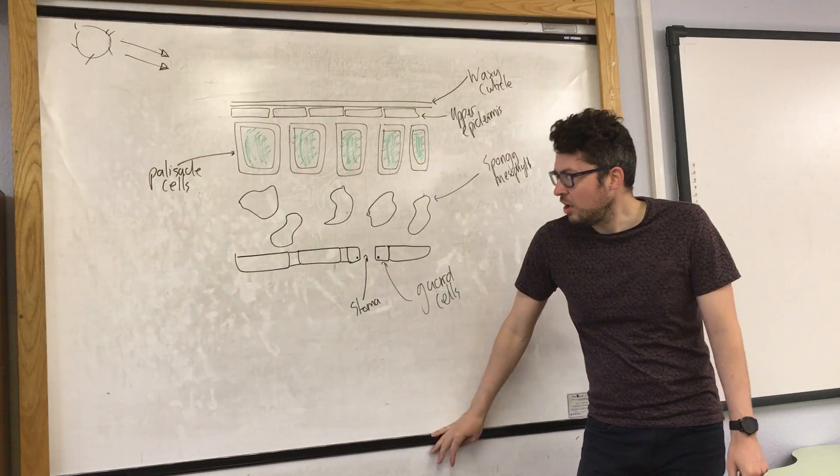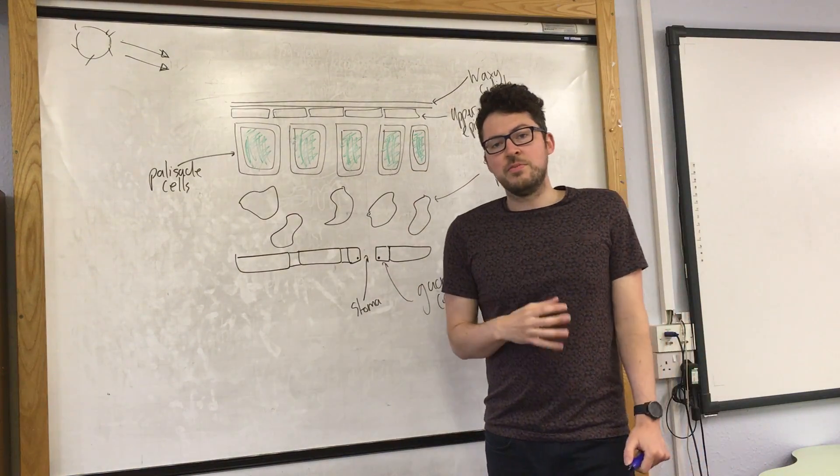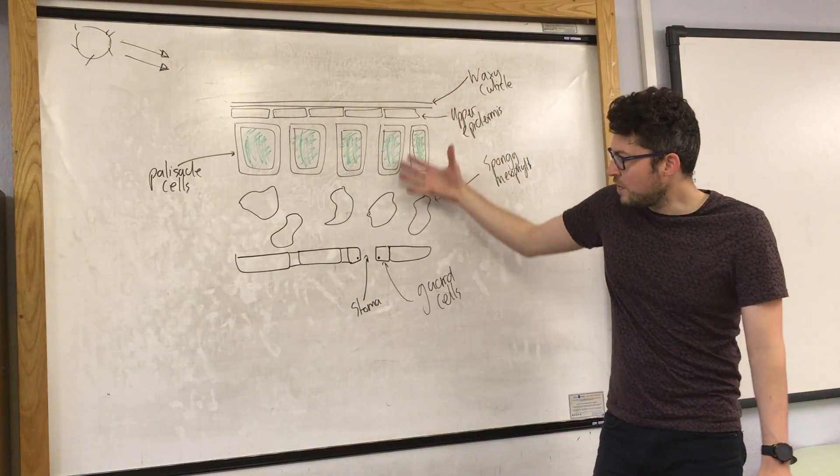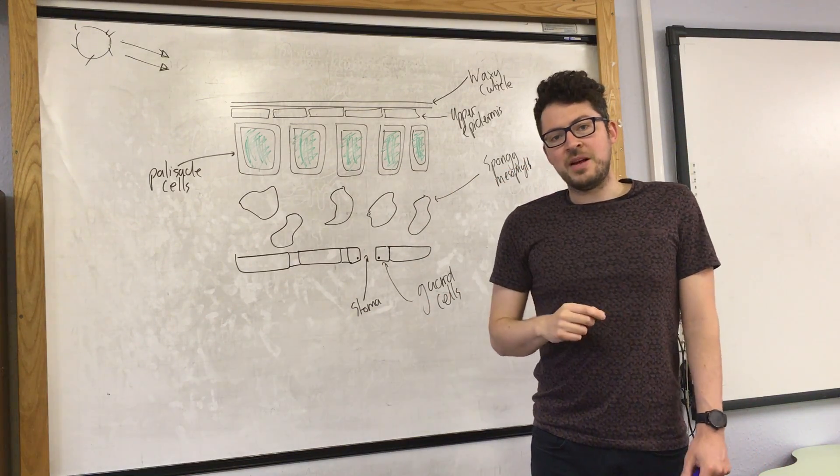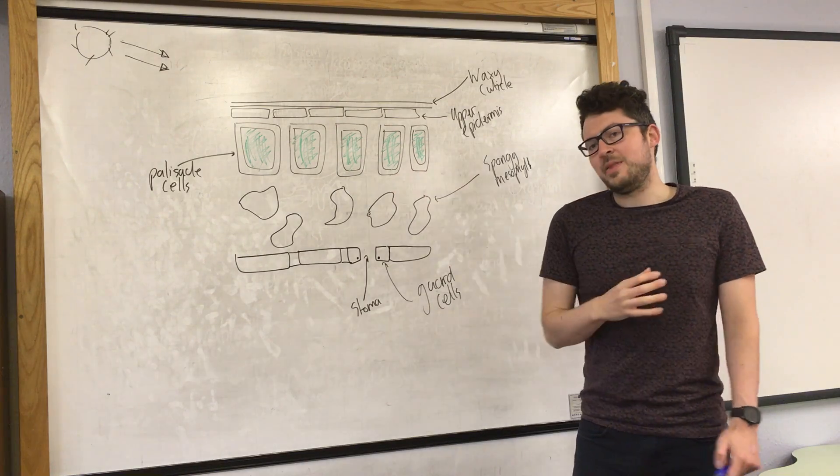That is the basic structure and function of the different parts of a leaf. You need to be aware of each part and what its role is. You also need to be able to label it on a diagram if they provide you one, so make sure you're familiar with it.